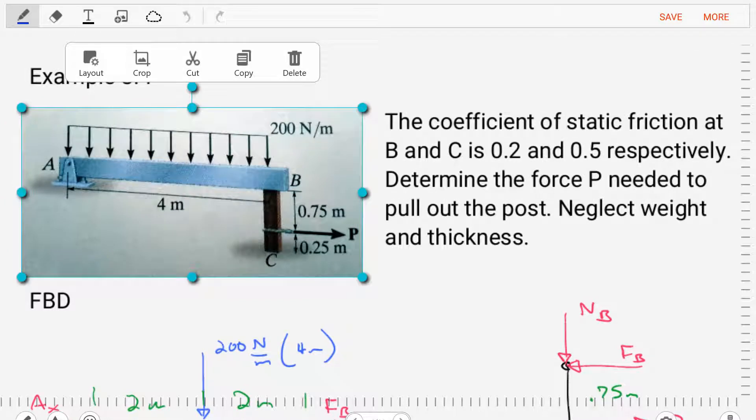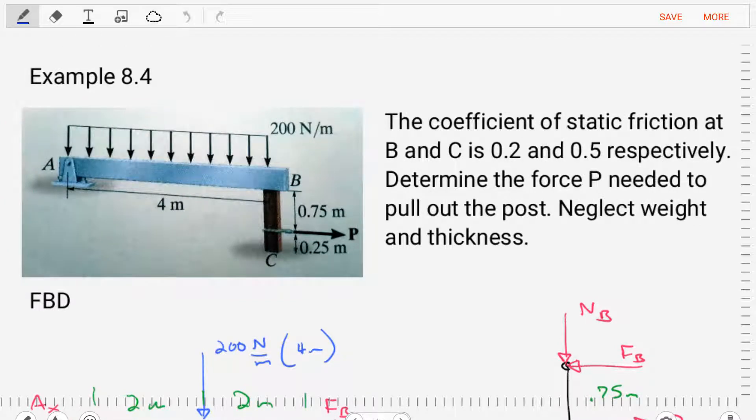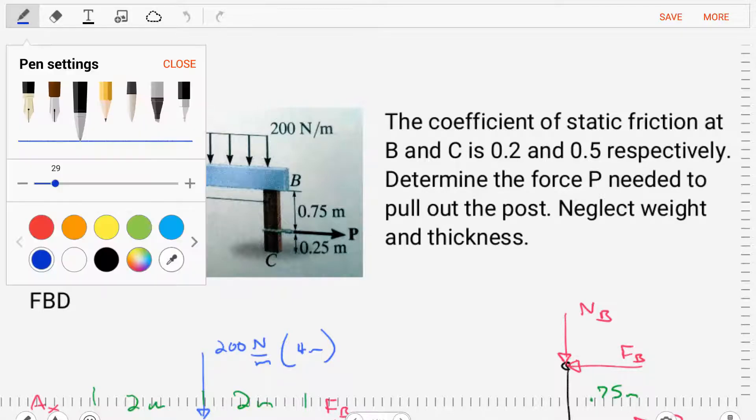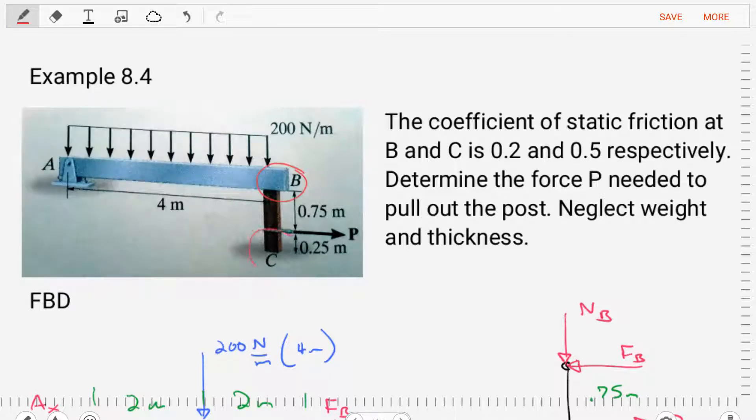This problem tells us the coefficient of static friction at points B and C are 0.2 and 0.5 respectively. We're asked to determine the force P needed to pull out the post. We're told to neglect weight and thickness.